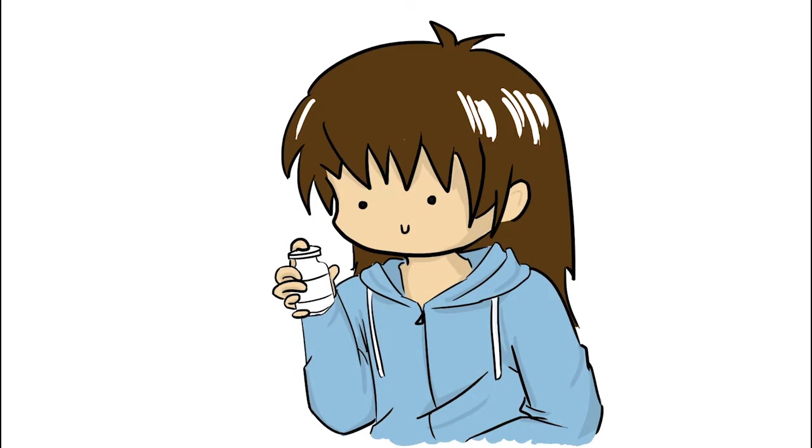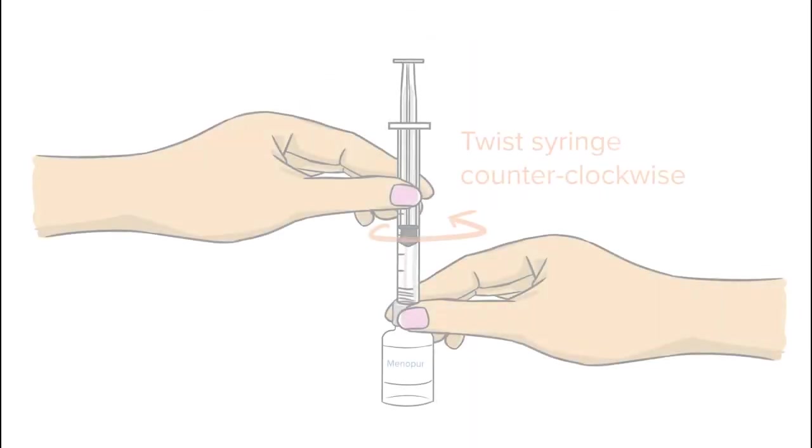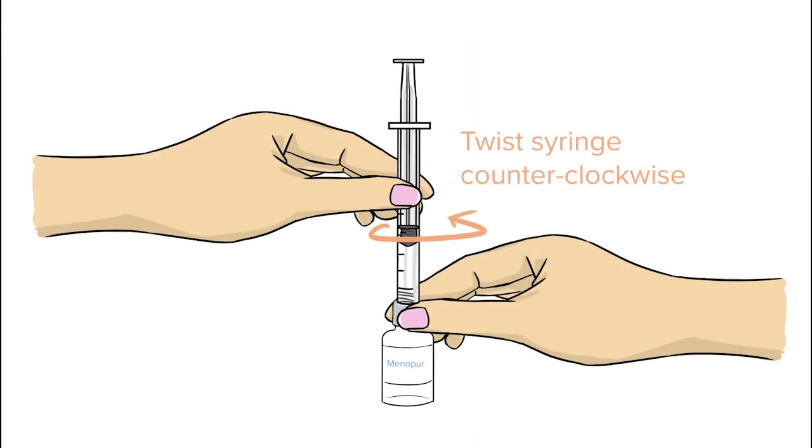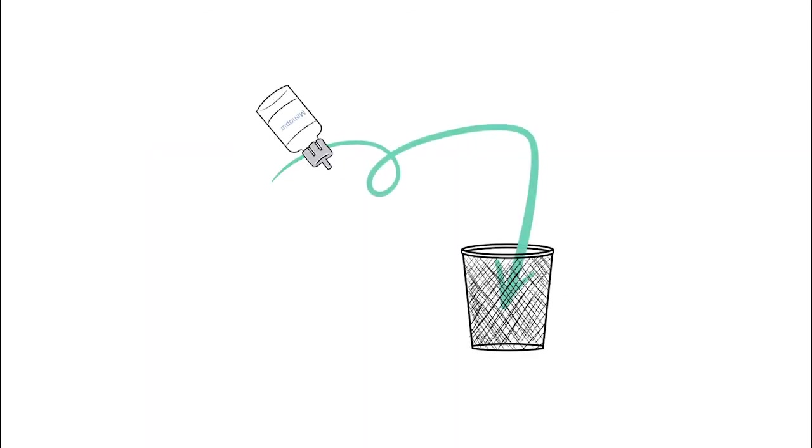When finished mixing and withdrawing the last vial for injection into the syringe, remove the syringe from the Q-Cap by twisting the syringe counter-clockwise. Throw away the Q-Cap with the attached vial into your trash can.